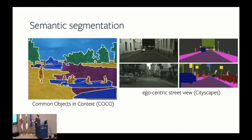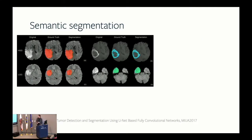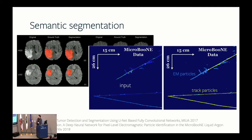Computer vision research is focusing on common objects in context — trying to segment everything on an image — or egocentric views for autonomous driving. Semantic segmentation is also used in other applications: there are papers doing segmentation and detection for brain tumors, and physicists use it to analyze scans and segment and track particles.